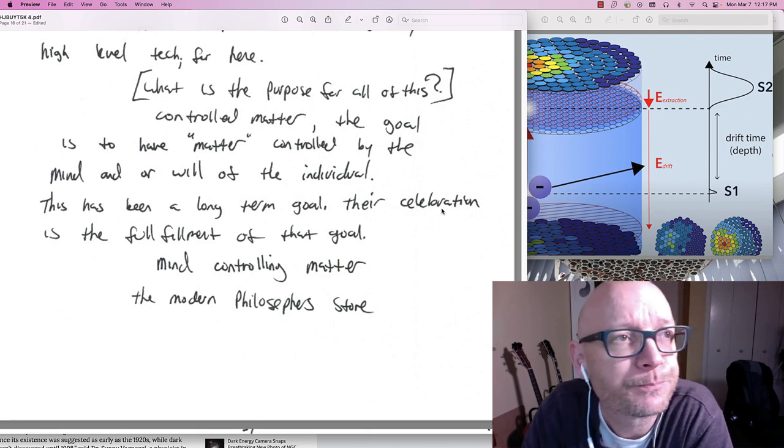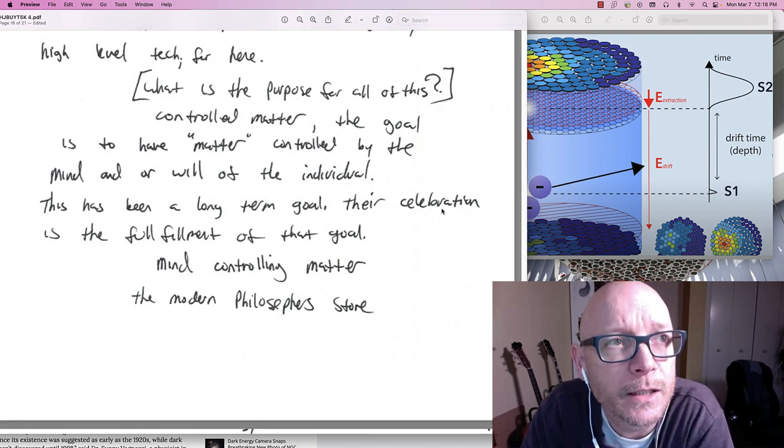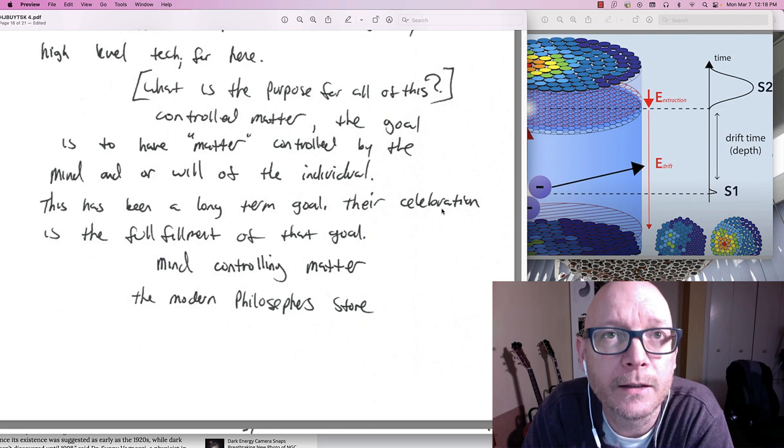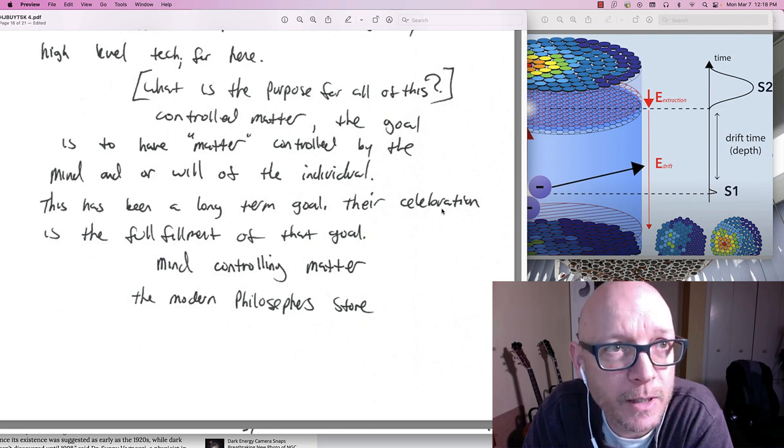Meaning that if the weakly interacting massive particle. Be it dark energy, dark matter, or whatever ends up being. Is it something that can be controlled? And is that part of their intention in the experiments?